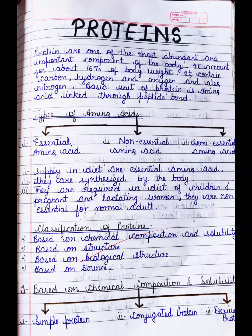Proteins are one of the most abundant and important components of the body. It accounts for about 16 percent of body weight. It contains carbon, hydrogen, oxygen, and also nitrogen. The basic unit of protein is amino acids linked through peptide bonds. Proteins are the building blocks of the body, meaning proteins are formed in our body in the form of chains of amino acids linked by peptide bonds.